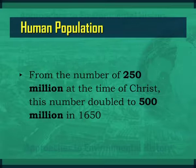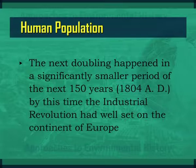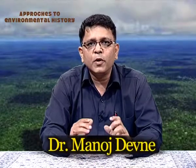From the number of 250 million at the time of Christ, this number doubled to 500 million only in 1650. The increase, however, was more attributed to the fag end of this period when the industrial revolution had just about settled in on the continent of Europe. The next doubling happened in the significantly smaller period of the next 150 years, that is, 1804 AD. By this time, the industrial revolution had well set in on the continent of Europe. For the first time in human history, the world population was 1 billion. The subsequent doubling of population has taken lesser and lesser time. It was around 1925 that the world population doubled to 2 billion. It is interesting to note that not more than 100 years ago, the world population was less than the combined population of India and China today.